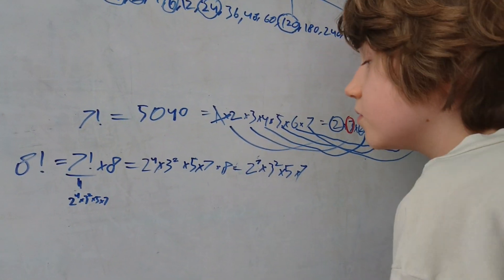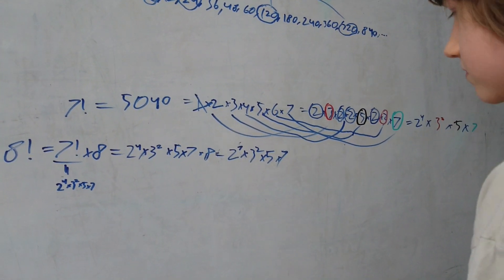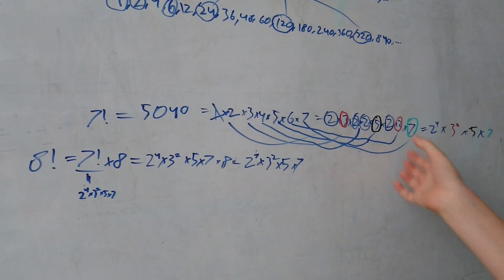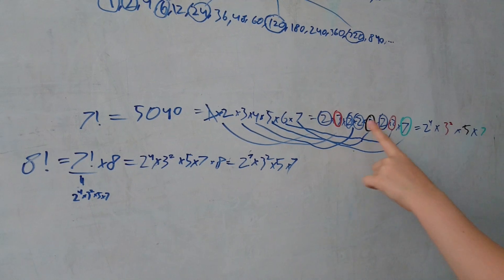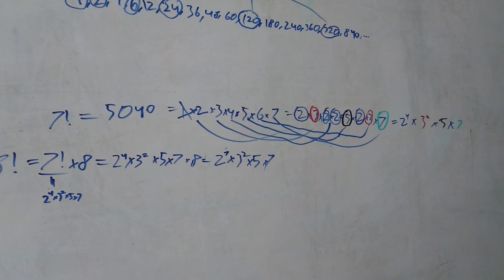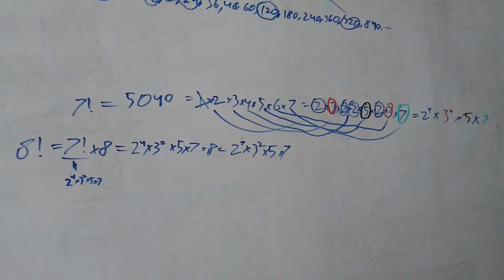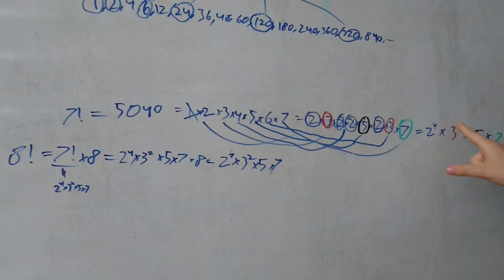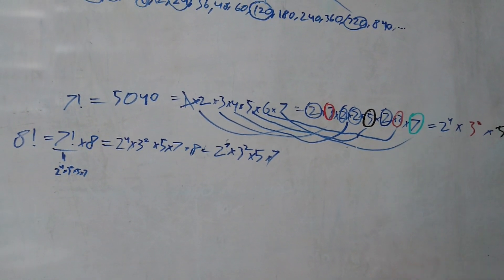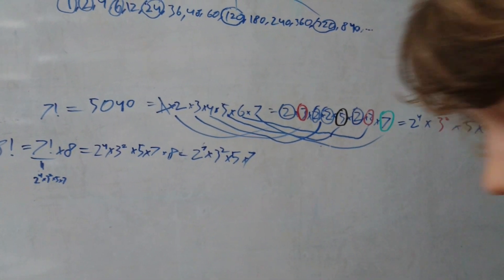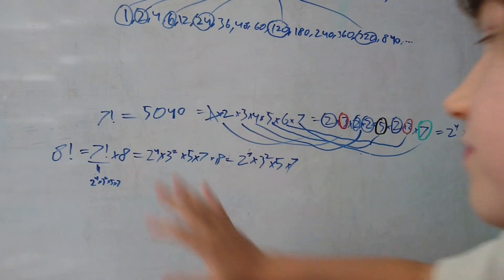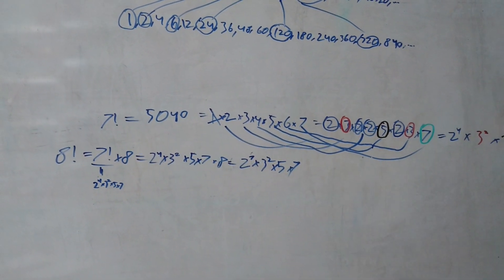We've got this. And then I've written every number in here as its prime factorization. And then I've put all the twos together, and I ended up with 2 to the 4, put all the threes together with 3 squared, all the fives together, there's just one five, so five. The sevens together, you get a seven. So this is the prime factorization of 5040, which is 7 factorial, by the way.